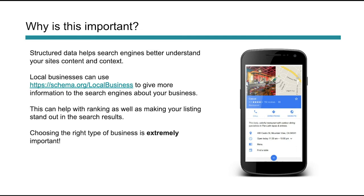If we look at this mobile screenshot here, you can see it's pulling in Google My Business but it's also pulling in a lot more information from structured data — things like the menu, finding a table, hours of operation. This can all be added in and structured using structured data. And when you have Google My Business and you tie this into your website, it actually affirms that data, connects it more, and helps Google really understand that your website and your local listing are connected in more than one way.